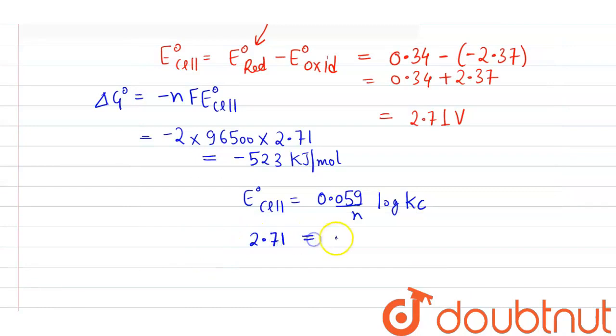2.71 equals 0.059/2 log Kc. This will be multiplied to this and divided accordingly.